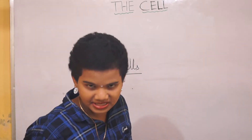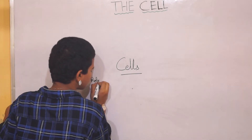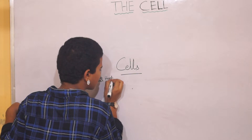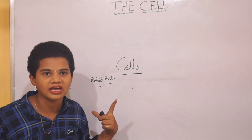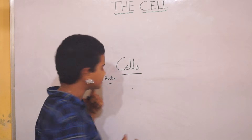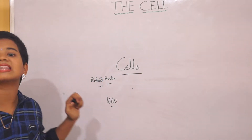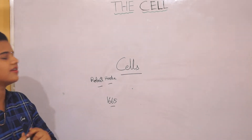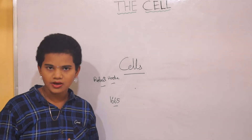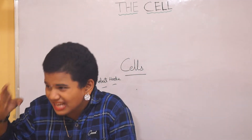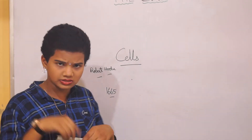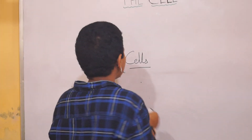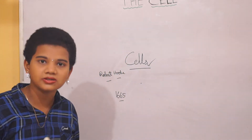First of all, let us know the discovery of the cell. The cell was discovered by Robert Hooke in the year 1665. He was an English scientist. He took a thin slice of cork and placed it under his microscope, and he saw tiny structures or compartments — honeycomb-shaped structures. He named those as cells.